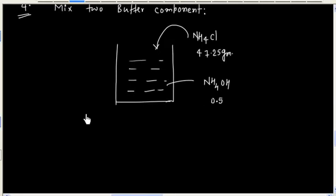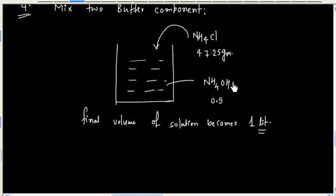Sufficient amount of ammonium hydroxide is added so that final volume of solution becomes 1 liter. So this is a way to prepare a basic buffer.